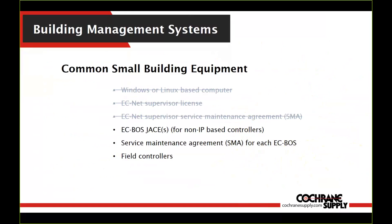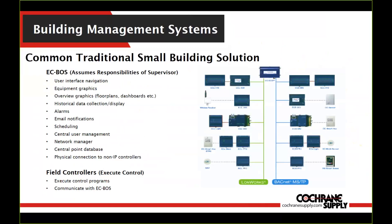In small buildings, typically due to cost or system requirements, we usually cut a lot of parts of that architecture out. We remove the Windows server, the supervisor, and that maintenance agreement. Maybe we'll keep an ECBOSS, especially if we have to integrate LAN, MSTP, or any field bus that's not IP, and then field controllers to run your control. The ECBOSS would maintain all the function of your supervisor — navigation, graphics, historical data collection, alarms, email, scheduling, and user management. A common alternative is to just eliminate the ECBOSS and have a network of field controllers that can talk to each other, share some data, but with no visibility into the system at all.